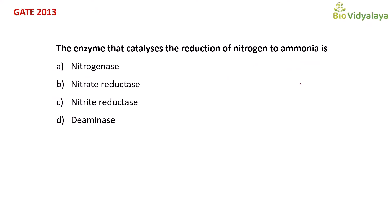This is the question from GATE 2013. The enzyme that catalyzes the reduction of nitrogen to ammonia is: option A, nitrogenase; option B, nitrate reductase; option C, nitrite reductase; option D, DMN-ase. The enzyme that catalyzes the reduction of nitrogen to ammonia is nitrogenase. So the correct answer is option A, nitrogenase.